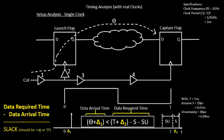If data required time minus data arrival time is negative, we call it a slack violation. Even when it is positive, the value is still called slack — but we distinguish between negative slack and positive slack. Slack is expected to be either positive or zero. Data required time and data arrival time are very frequently used terms in the VLSI world. In setup timing analysis, the right-hand side is the data required time, and the left-hand side is the data arrival time. If data arrival time is less than data required time, slack is positive and we are good to go. If data arrival time exceeds data required time, slack becomes negative and it is called a violation.